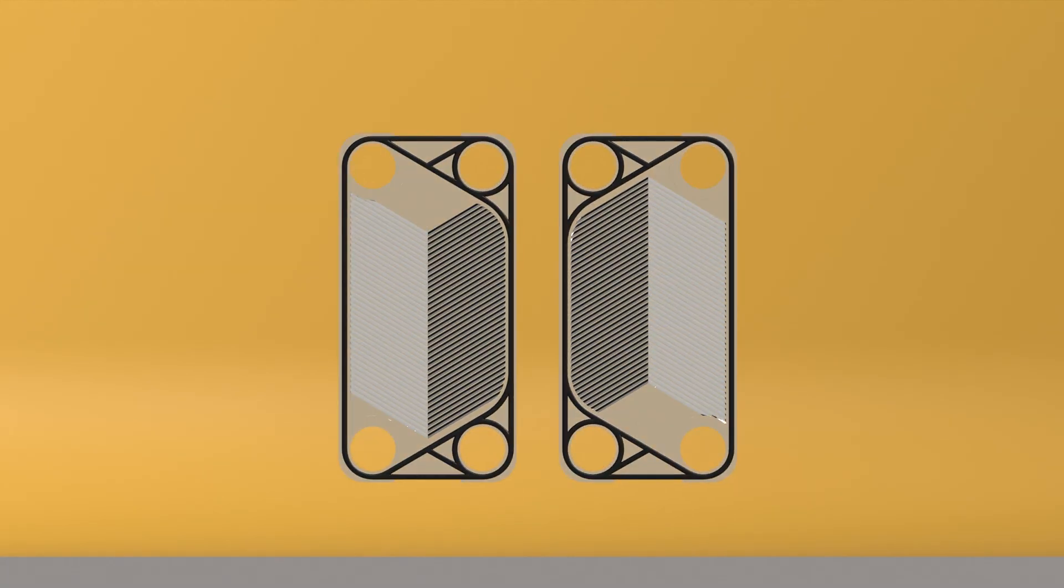The key part of a PHE is the plate design. Each plate has a special corrugated pattern that increases the turbulence, which improves the heat transfer.